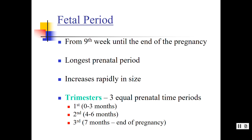There are three trimesters. The first trimester is from conception to about three months. The second trimester is about three to six months, and the third trimester is about seven months to the end of pregnancy. The germinal period and the embryonic period both happen during the first trimester, and the fetal period also begins during the first trimester — which shows why so much change is going on to a woman's body early on.